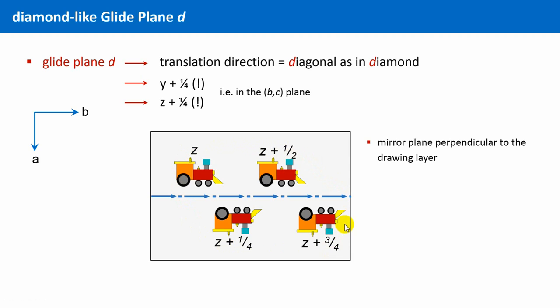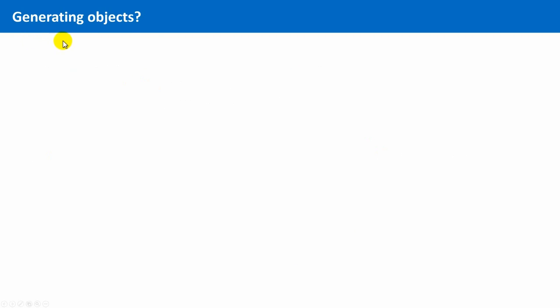Let's pause for a moment. You might ask, why are we doing this? And what is the meaning of generating objects? Aren't the objects, namely the atoms of a crystal, already there? Indeed, they are already there. But we are doing this because we want to be able to characterize symmetry-related atoms, symmetry-related positions within a crystal.